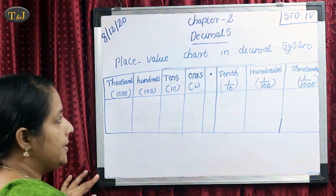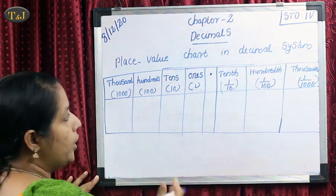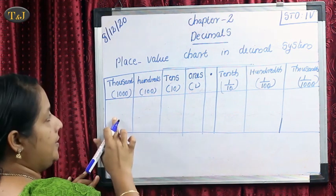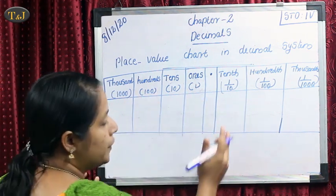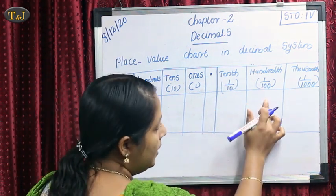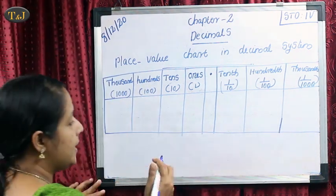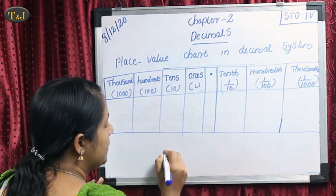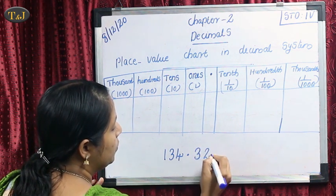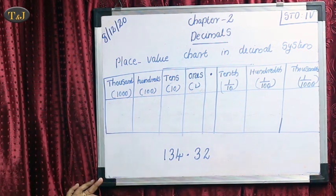This is our place value chart in the decimal system. Before the point: 1's, 10's, 100's, 1000's. After the point: tenths (1 by 10), hundredths (1 by 100), thousandths (1 by 1000). Now some examples. Take the number 134.32.